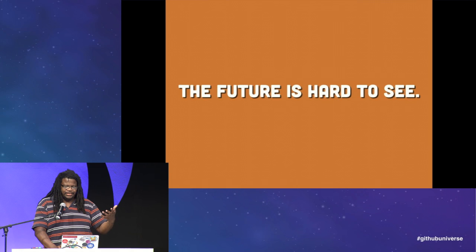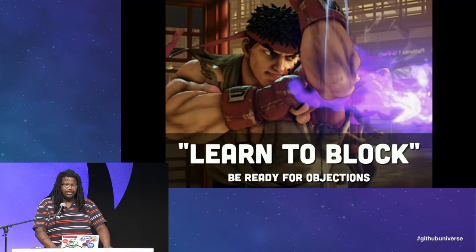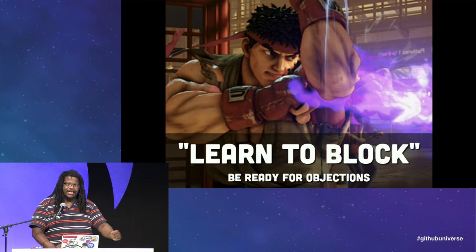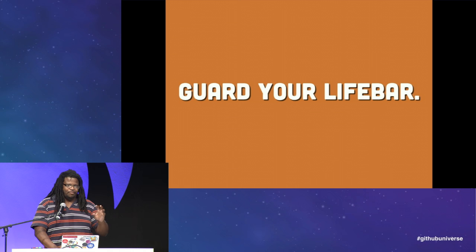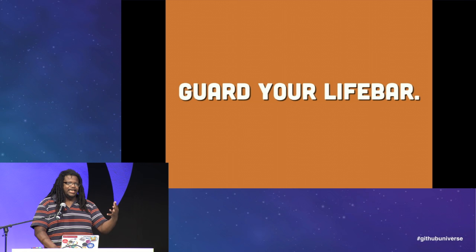You want to give people the opportunity to interact with and touch the project whenever possible. Next tip: learn to block. In Street Fighter you hold back before an attack comes in to defend against it. In your organization, you hold back by thinking about what can go wrong — what the project is bad at — not just the good points. You need to guard its life bar as it were, by acknowledging trade-offs. Every project is going to do some things well and some poorly, and if you can bring up the weaknesses before someone else does, that increases confidence in the project.